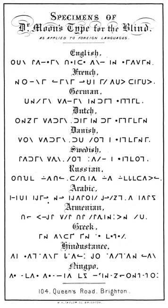See also: Two-cell Chinese Braille, Taiwanese Braille, Cantonese Braille. Moon type is a simplification of the Latin alphabet for embossing. An adaptation for Ningbo reading blind people has been proposed.